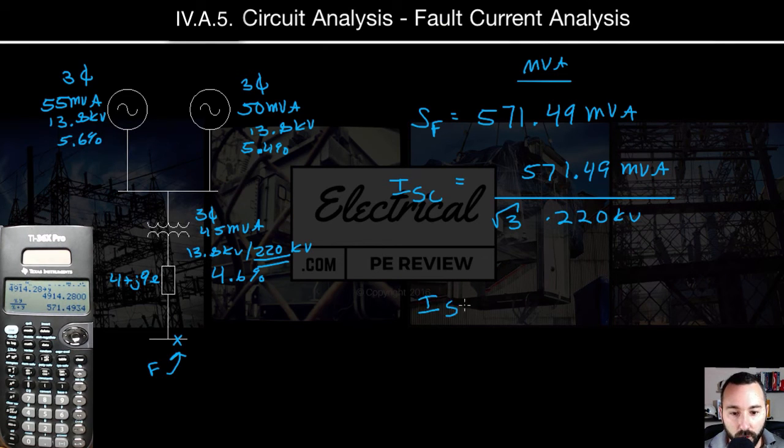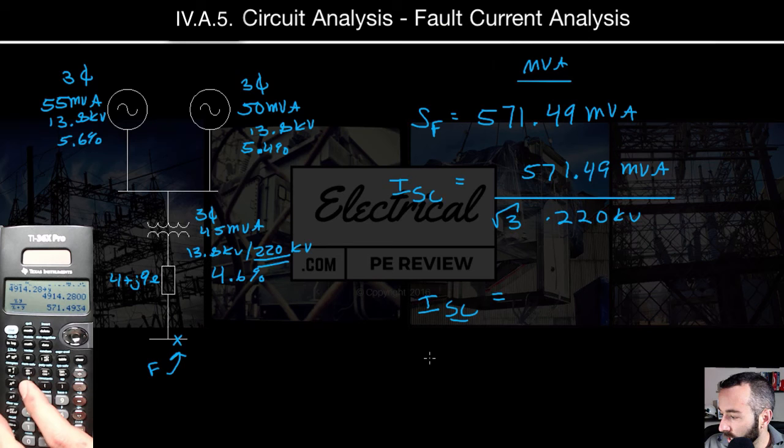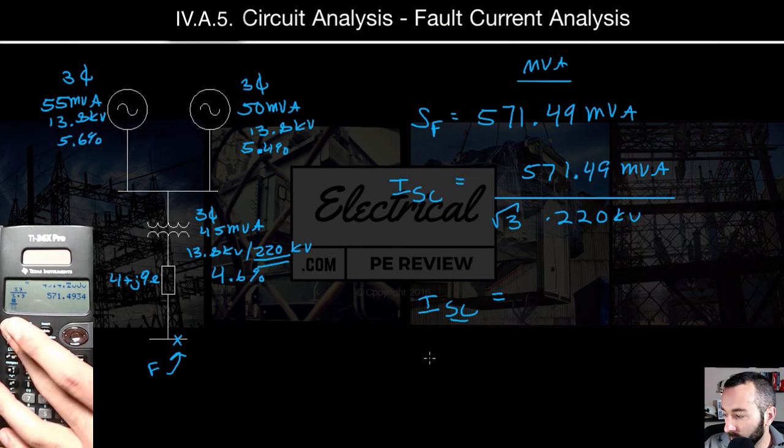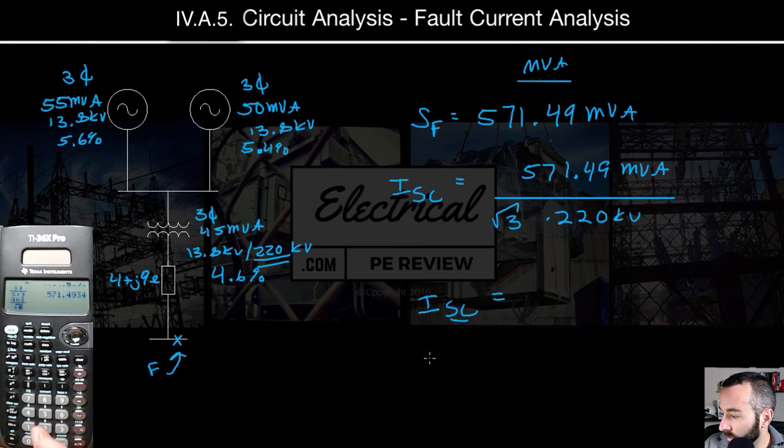So let's see what we get for our fault current or our short circuit current. So we already have the MVA value here on our calculator. So I'm just going to go ahead and hit the fraction button, second answer, and then divided by square root three times 220.